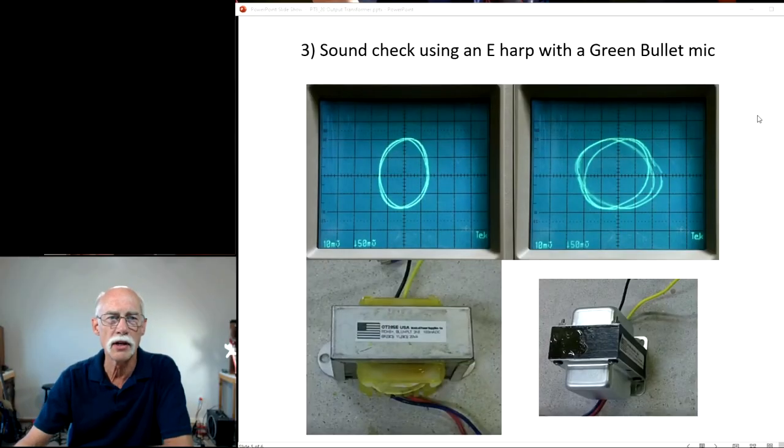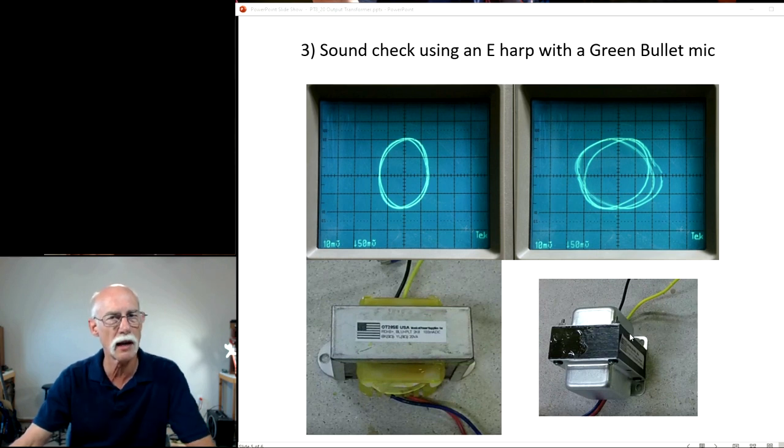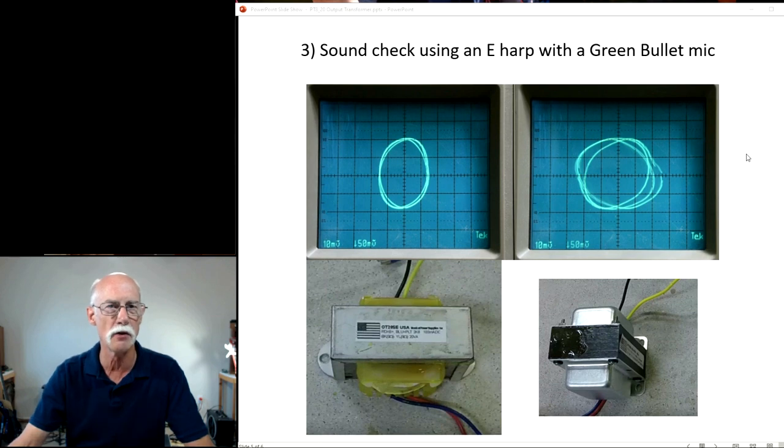Next I'm going to do a sound check with e-harp with a green bullet mic. I'm going to play the clean transformer first and then I'm going to play the 10 watt, but more importantly the three layer secondary winding transformer. It is in fact distorting the sound which is what's giving you that bassy boxy sound familiar to all Premier Twin 8 players.